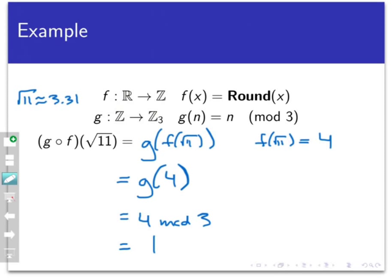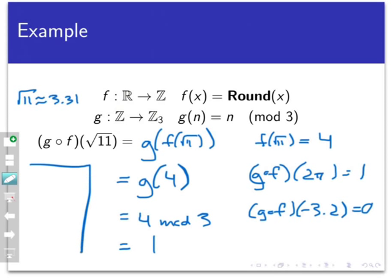Likewise, and you should check this on your own, g circle f of 2 pi is equal to 1, and g circle f of negative 3.2 is equal to 0. Notice that if we tried to reverse the order here and form f circle g, this wouldn't make mathematical sense, because I would have to perform g first given an input. g is a function from the integers to z3, and then I would have to take that output and load it into f. But the domain of f is the real numbers, not z3. So in this case, I really can't reverse the order of composition because the codomain of the first function is not equal to the domain of the second one.